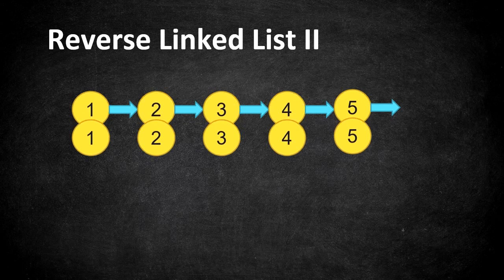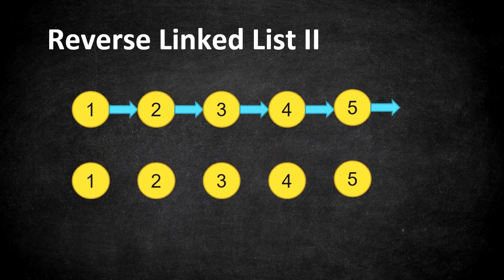We have nodes given, and from these nodes we are going to reverse the pointers alone instead of moving the nodes around. First, we are going to assign a null value to the head of the linked list because it is going to become the tail. Starting from the very next node, we reverse the pointer from the forward direction to the backward direction, and assign the head of the linked list to 5, which is the new tail.